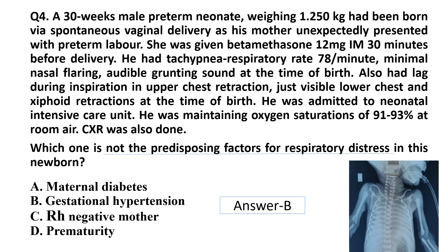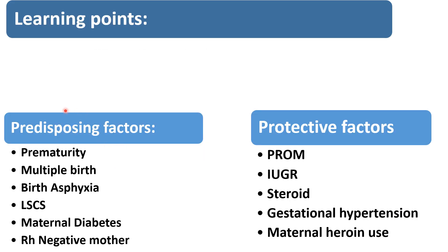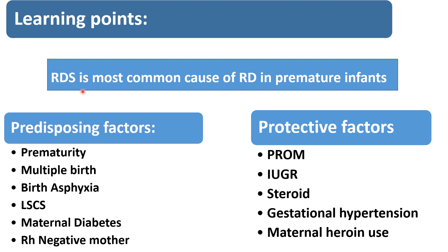We must remember that a premature baby with respiratory distress means RDS, as it is the most common cause of respiratory distress in premature infants. Predisposing factors include: prematurity, multiple births, birth asphyxia, LSCS, maternal diabetes, and RH-negative mother. Protective factors include: PROM (premature rupture of membranes), IUGR (intrauterine growth retardation), antenatal steroids given to the mother, gestational hypertension, and maternal heroin use.